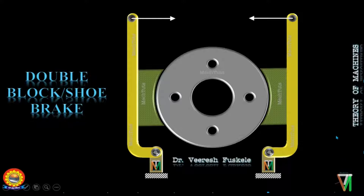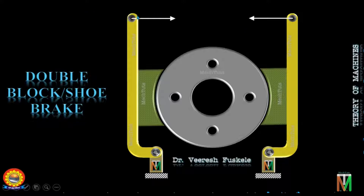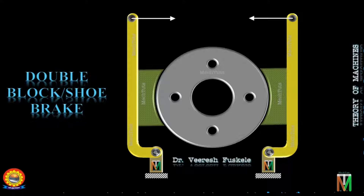As you can see the construction of the double block brake: two levers with blocks attached are placed diametrically and symmetrically on both sides of the drum. The two levers are pivoted at two points as shown, and two equal and opposite forces are applied at the free ends of the two levers to apply the brake and stop the drum. Generally, a bell crank lever arrangement is used to apply these two equal and opposite forces.